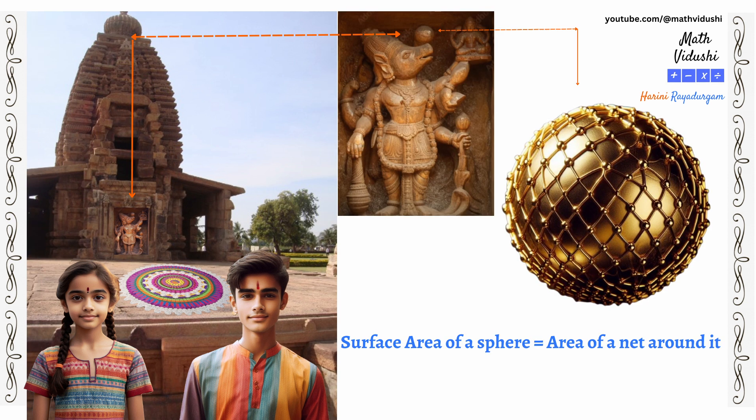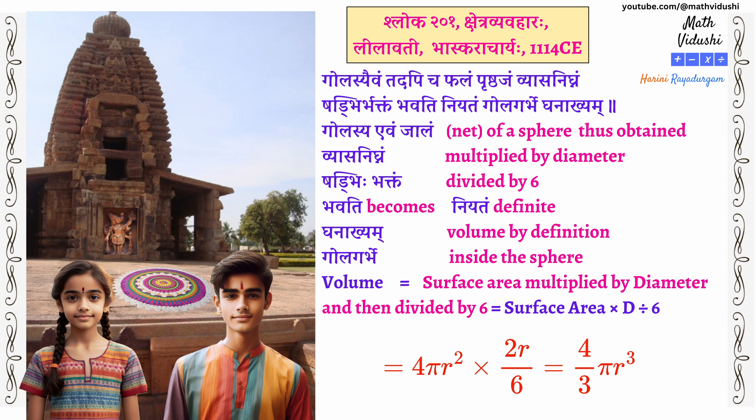Bhaskaracharya says that if I want a net cover for the sphere representing Bhoomi Devi here, I would need to calculate the surface area. Now if you want to know how much space is inside the sphere, you calculate its volume. Golasyaivam tadapicha falam prishtajam vyasa nignam, shadbir bhaktam bhavati niyatam gola garbhe ghanakhyam. The volume is the surface area multiplied by the diameter and then divided by 6. So that is 4πr² × 2r ÷ 6 = 4/3 πr³.